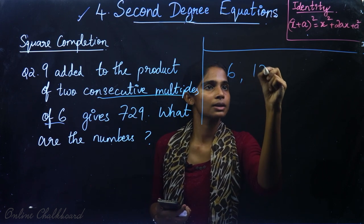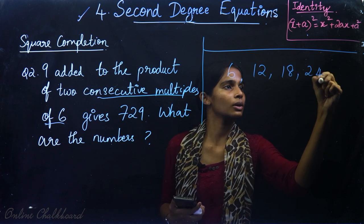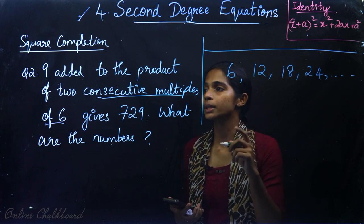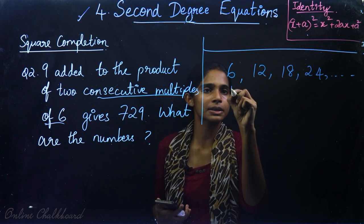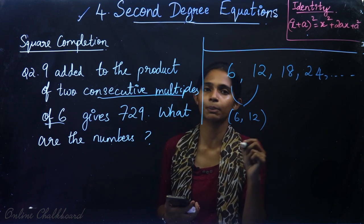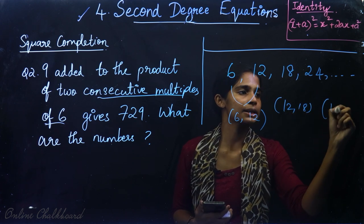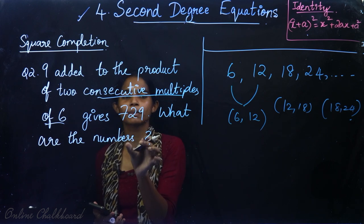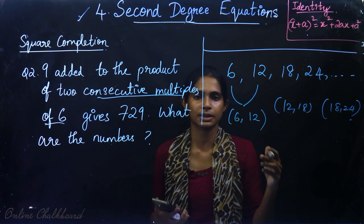Multiples of 6 are: 6, 12, 18, 24, and so on. So 6 and 12 are a consecutive pair of multiples of 6. Similarly, 12 and 18, and 18 and 24 are consecutive pairs. So we have 2 consecutive multiples of 6.